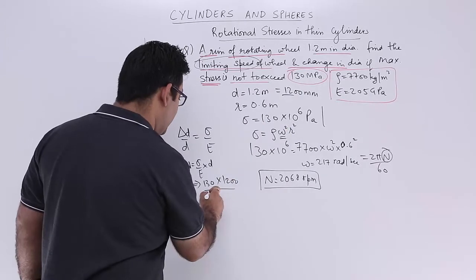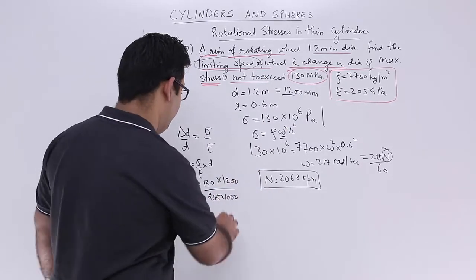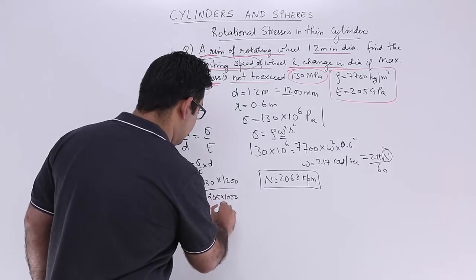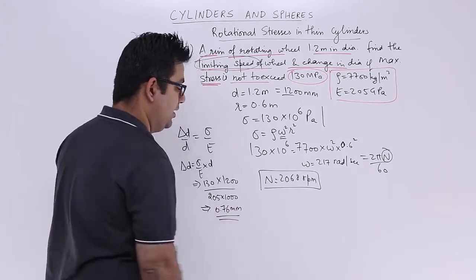E is in GPa, so multiply by 1000 to convert to MPa. When you solve this, the change in diameter is 0.76 mm.